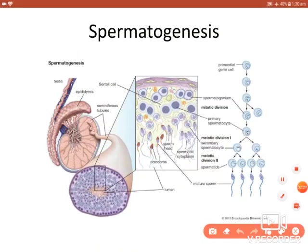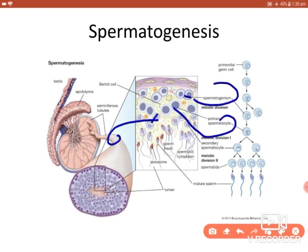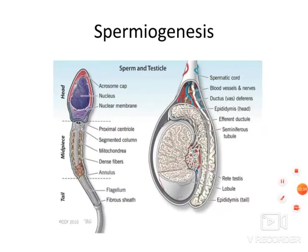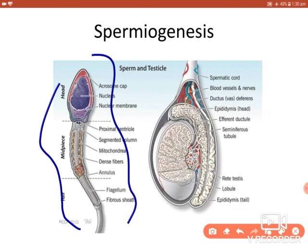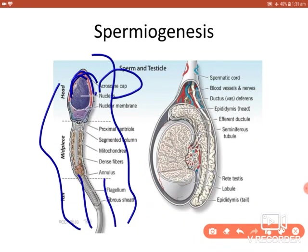Coming back to the wall of the seminiferous tubule: here you can see the spermatogonia at the basal level, the primary spermatocytes, the secondary spermatocytes, and the spermatids. The spermatids undergo changes and form the mature sperm through spermiogenesis, which occurs through four phases. First is the Golgi phase — the Golgi body in the spermatids forms the acrosome. Then there is the acrosomal phase, where the acrosome condenses to form the acrosomal cap.